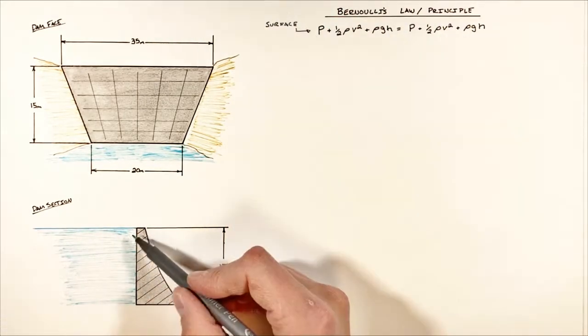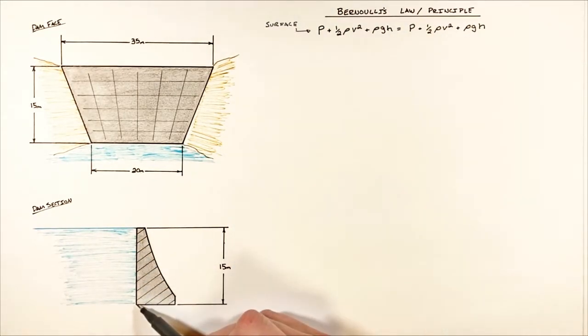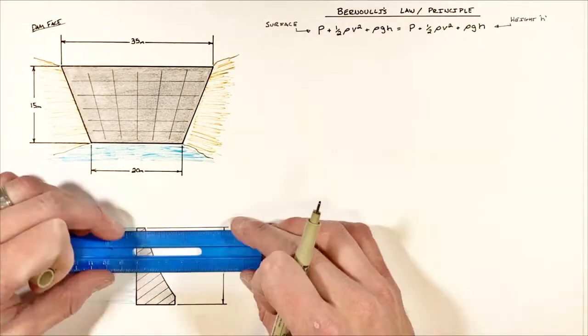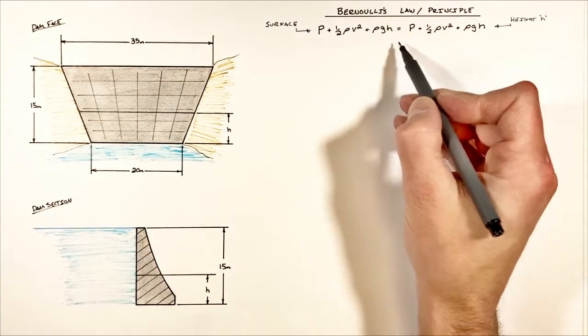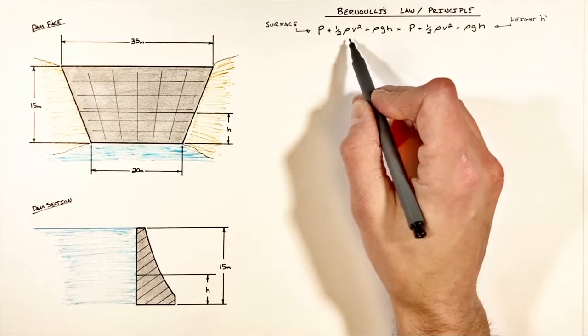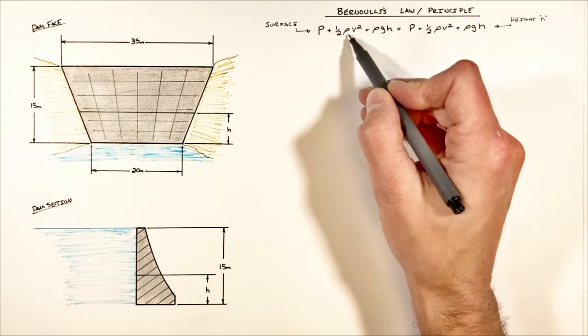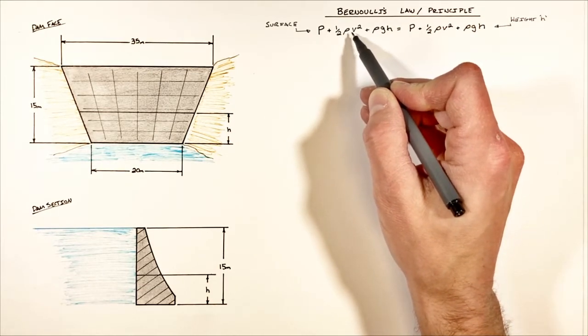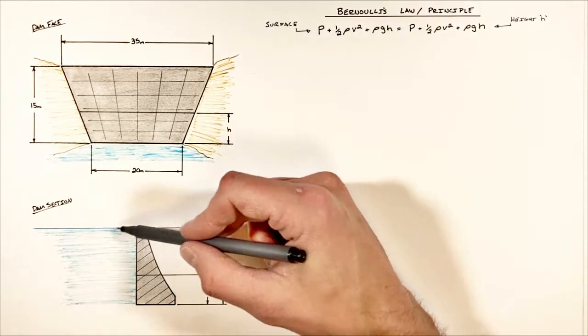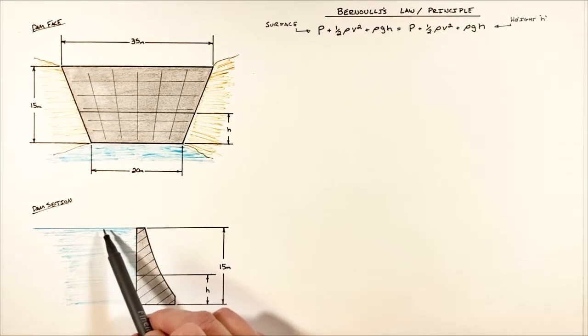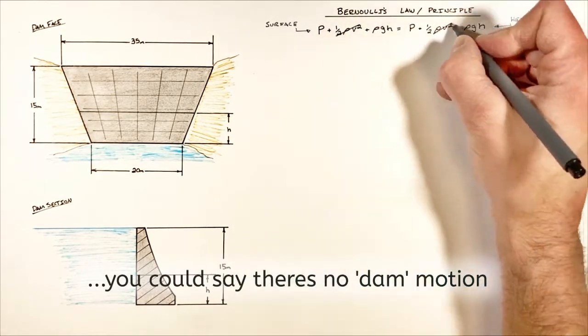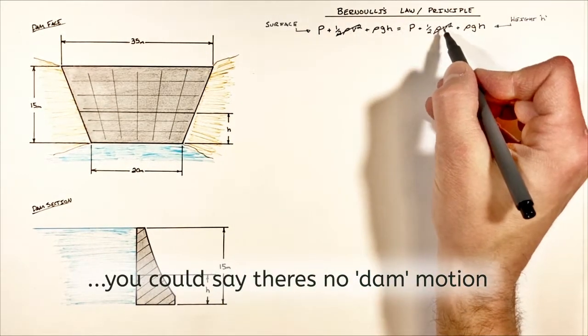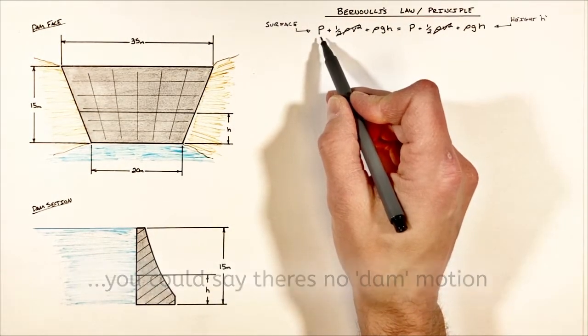There's three terms in Bernoulli's law. The first thing I want to point out is that this dynamic pressure, or this velocity-dependent pressure, is non-existent in this situation because for both the water at the surface as well as the water stacked up behind the dam, nothing's moving. So we see the velocity terms cancel out.